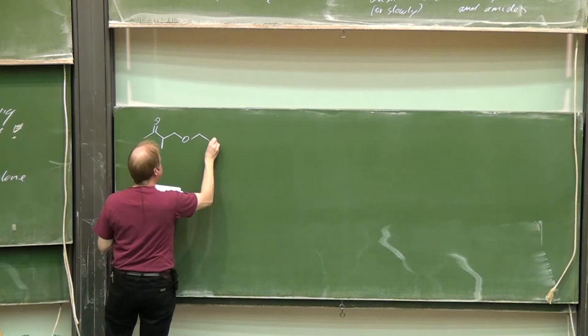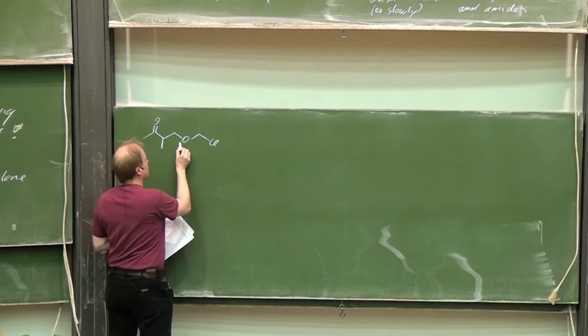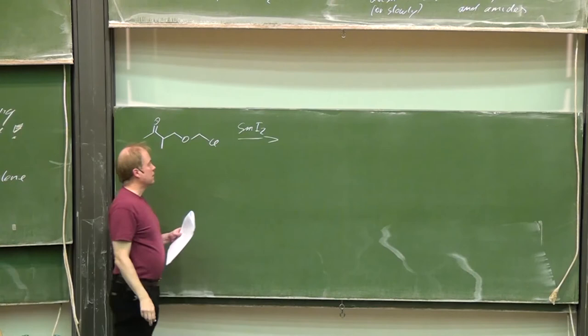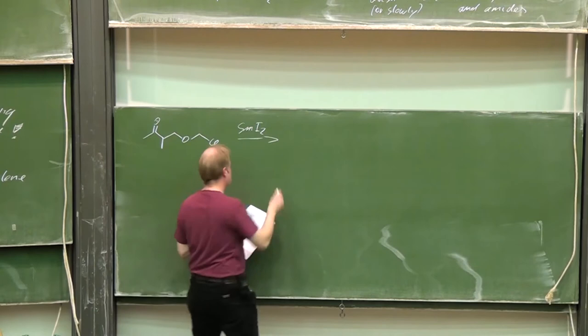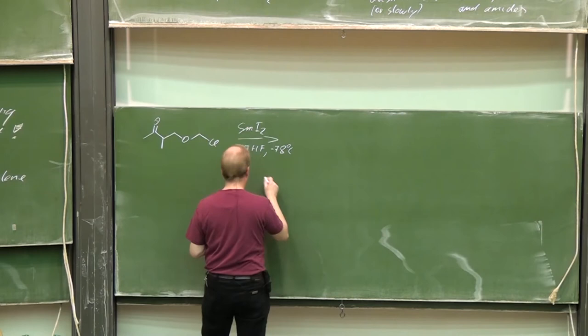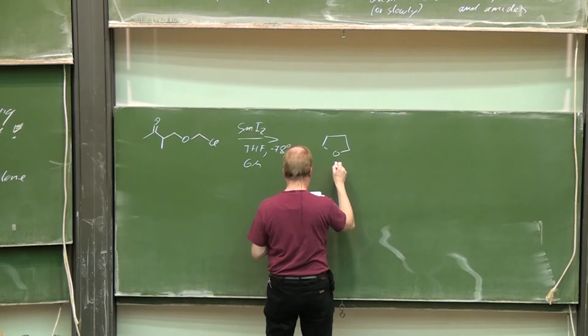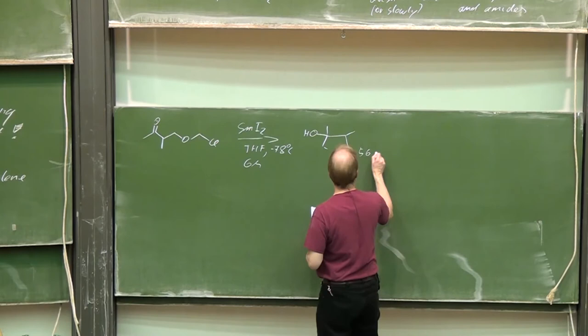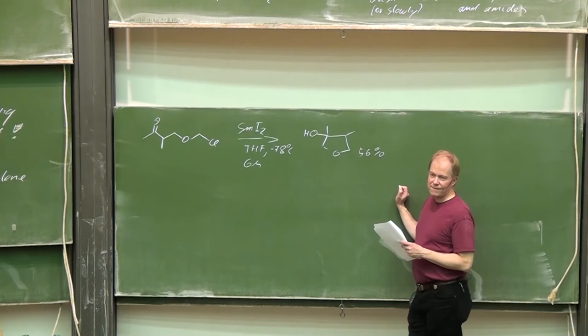Now, an intramolecular Barbier reaction. With samarium(II) iodide in THF, minus 78 degrees, six hours reaction time, we get this cyclization product, 56% yield. You might ask, how does this work?